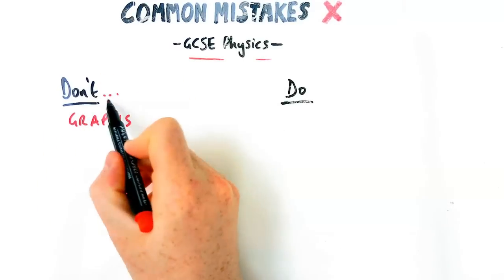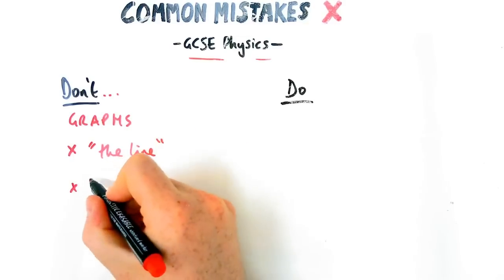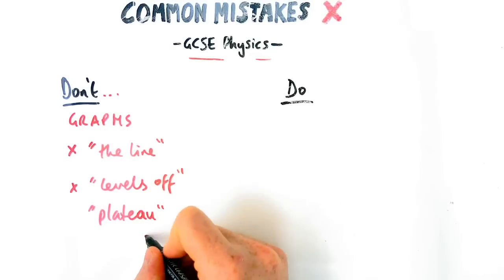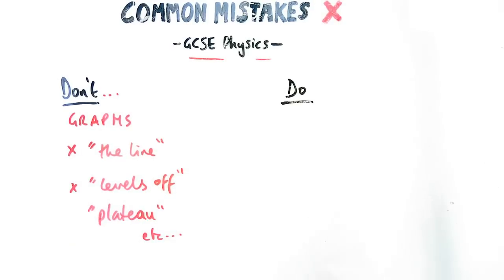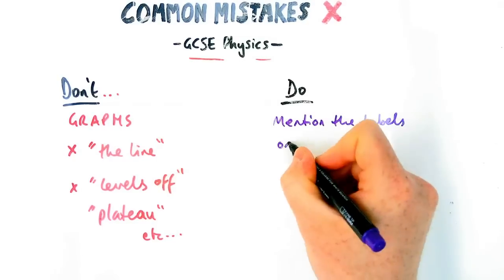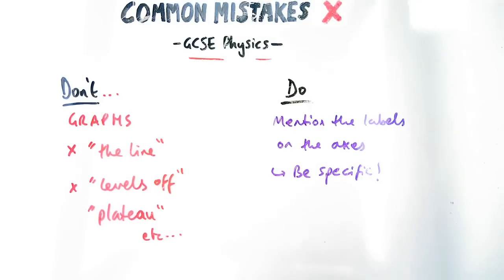This applies also with graphs in terms of how specific you're being. So please don't say it or the line or it levels off or it plateaus. None of those you'll see in any mark schemes for GCSE, not for a long time. So what you should say instead is the key term the question is asking about. Now on a graph, that would be the labels of the axes. So you'd be specific about what you're talking about.